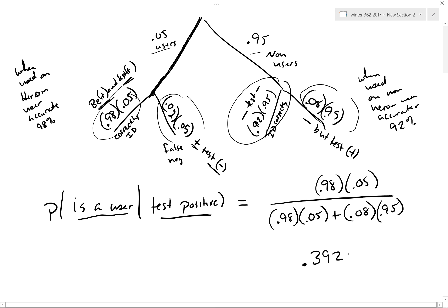In other words, what's happening here is that we are only, of all the people that are testing positive, only 39% of them actually are positive. If that were true, this would be a horrible test.